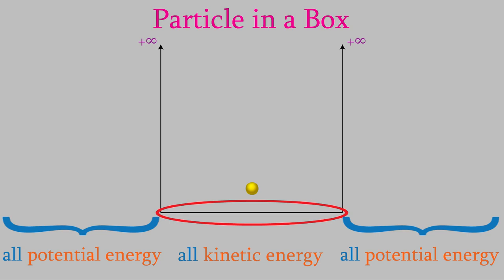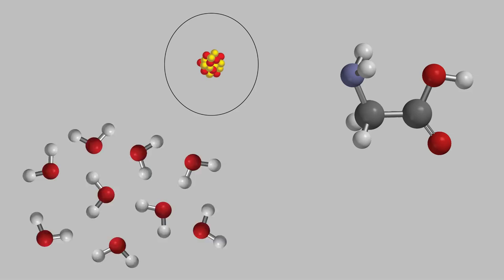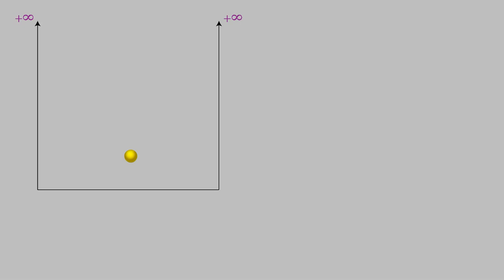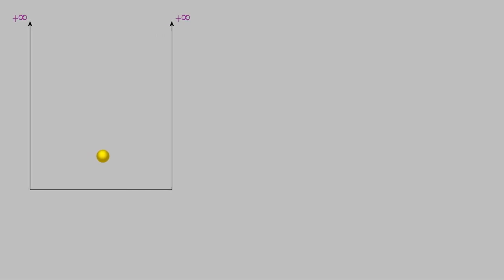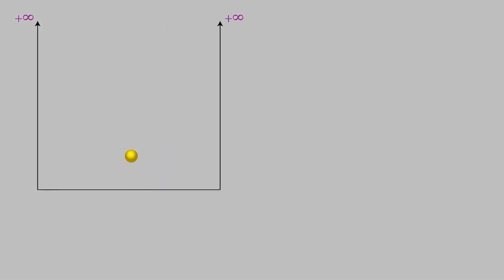I keep referring to the system being confined in the box, but what is the system? Technically it could be anything — an atom, a molecule, or even a large group of molecules. However, the larger the model, the more complicated the wave function will be. For that reason, let's look at what might be the simplest system we could possibly have: a single electron. So our model consists of one electron confined to the box. And how large is the box? It can actually be any length, from microscopic to cosmic in size. Let's just say it has an arbitrary length that we'll call A, so the left side of the box is at coordinate zero and the right side is at coordinate A.